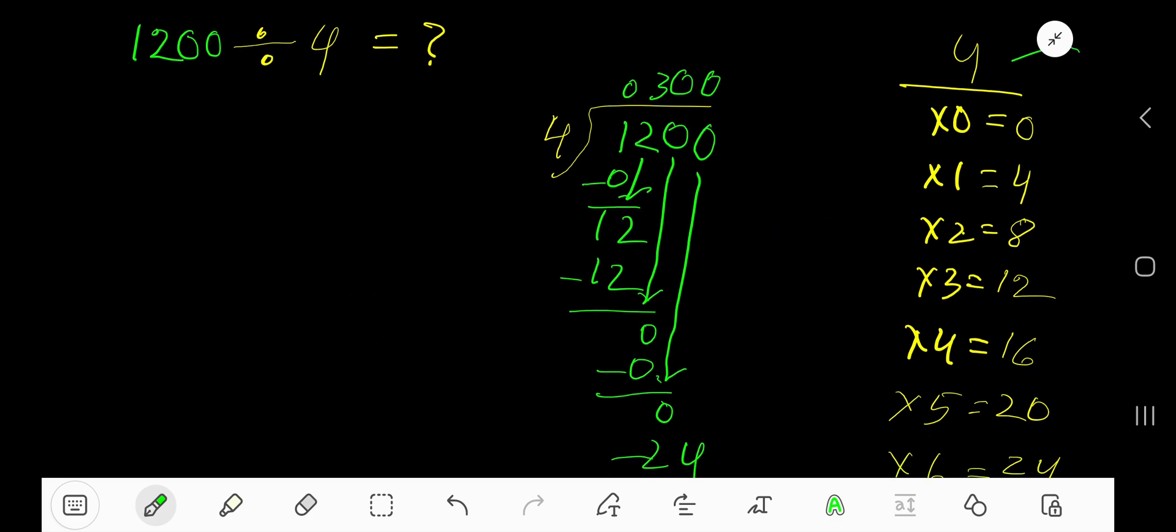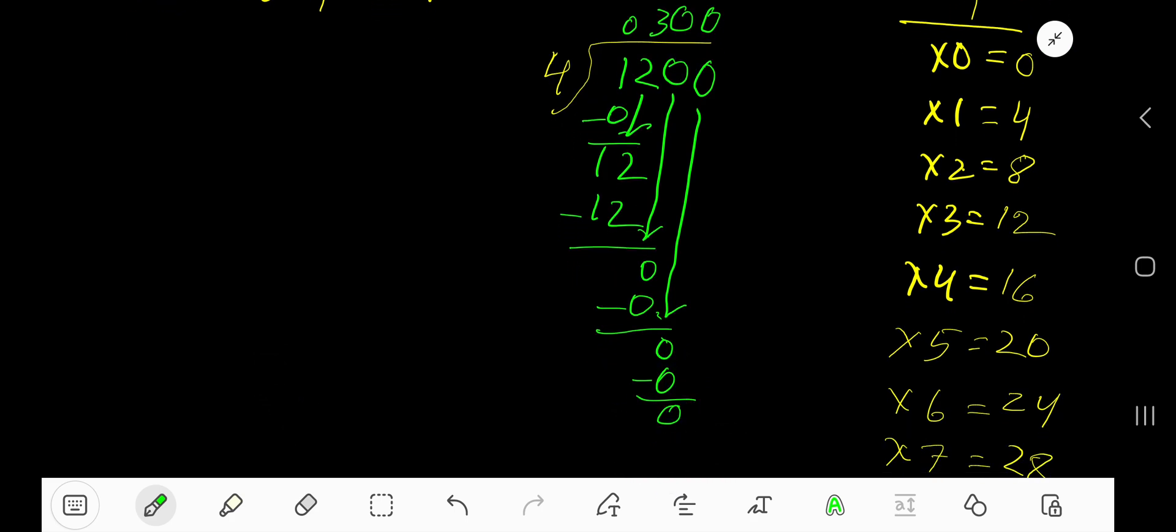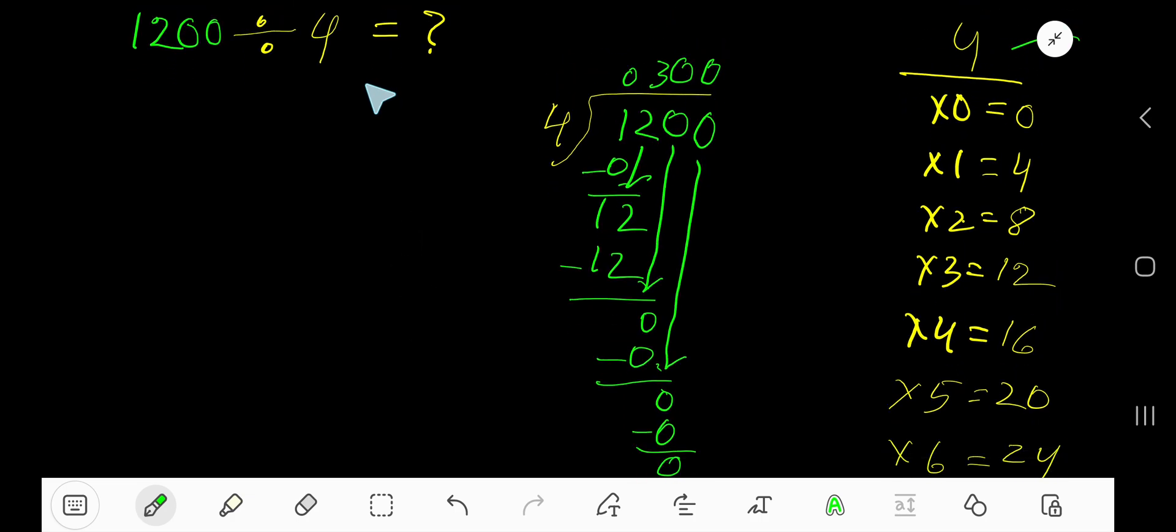0 times 4 is 0, subtract. Your remainder is 0, and since our remainder is 0, there is nothing left. So our answer is 300.